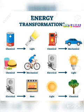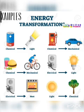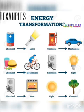Examples of how energy changes from one form to another: chemical energy in a battery converts to light energy when it is fixed in a torch; chemical energy in the food we eat converts to mechanical energy to move around; electrical energy converts to heat energy through the wire fixed in the circuit.